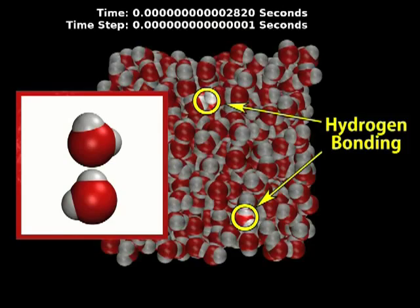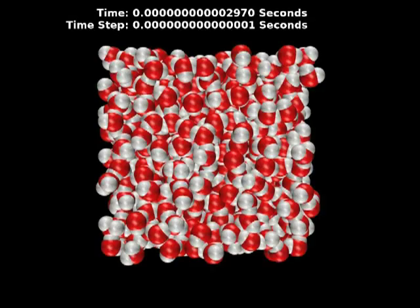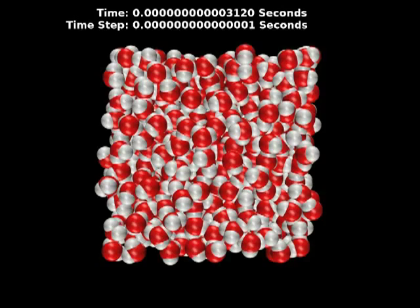When other molecules are dissolved, they also interact with the surrounding water. Here you can see a single molecule of dissolved glucose, a simple sugar composed of carbon, hydrogen and oxygen atoms.